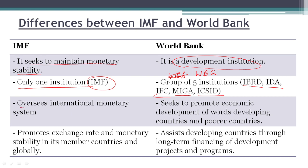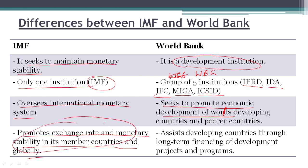IMF oversees the international monetary system and promotes exchange rate and monetary stability in its member countries and globally — this is the most important objective of IMF. The World Bank, on the other hand, seeks to promote the economic development of the world's developing and poorest countries, and assists them through long-term financing of development projects and programs.